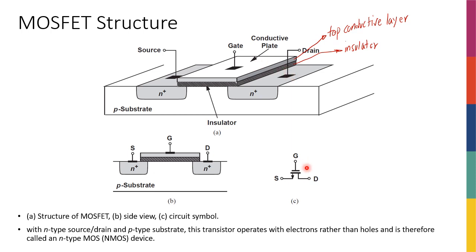In addition, I'm going to have two other terminals — drain and source — because in the end I'm making a three-terminal device called a transistor. It turns out that connecting wires, which are metal, to the P-substrate directly doesn't produce a good ohmic contact — meaning a contact that allows current in both directions, like a resistor with low resistance. By contrast, a P-N contact only allows current in one direction.